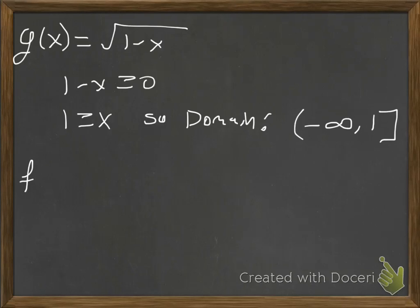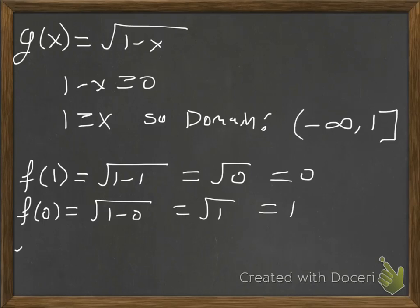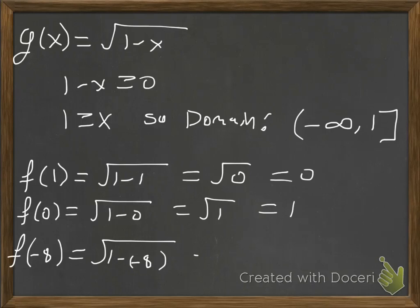As long as we don't pick values larger than 1, this function is defined. If we plug in 1: 1 minus 1 is 0, and the square root of 0 is 0. If we plug in 0: 1 minus 0 is 1, and the square root of 1 is 1. Or try negative 8: 1 minus negative 8 is 1 plus 8, which is the square root of 9, which is 3.